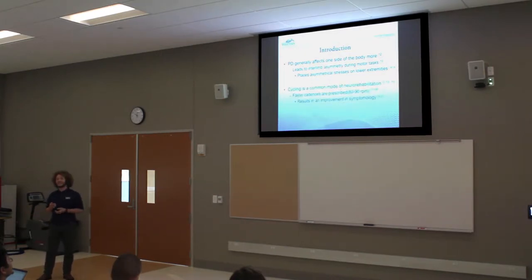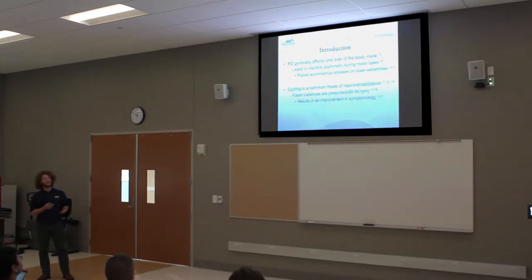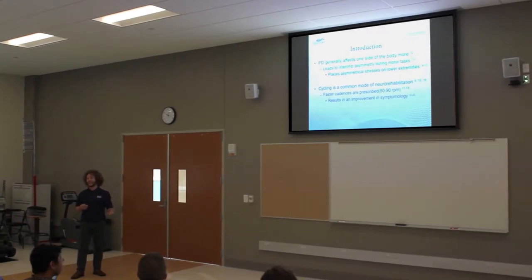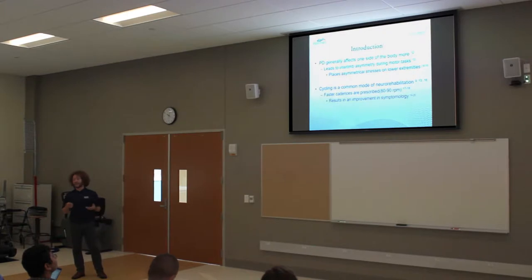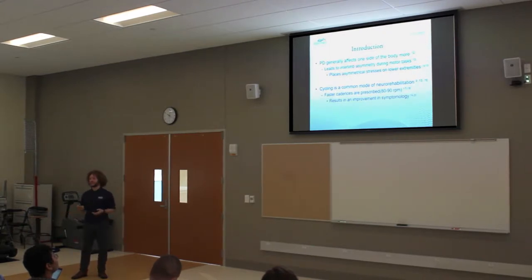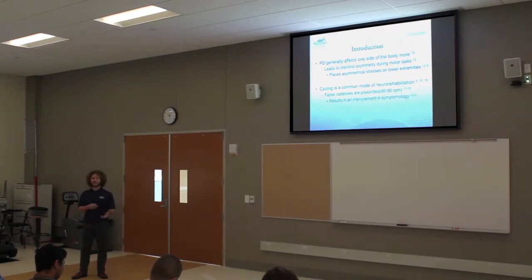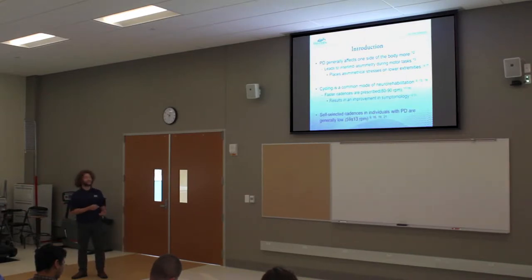Cycling is a very common mode of neurorehabilitation. For cycling to be beneficial in individuals with Parkinson's, cadences need to be faster — generally around 80 to 90 revolutions per minute. The improvements in symptomology include a decrease in bradykinesia and rigidity, and an increase in postural balance. However, in research where individuals self-select a cadence, those cadences are generally lower, roughly around 60 revolutions per minute.